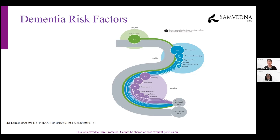Towards later life, the most important risk factors to keep in mind are depression — it's important to address that. Stop smoking — that is a surprisingly high contributor at 5%. Social isolation is very common and can be addressed with minimal inputs. Air pollution and diabetes are things we need to work on together as a community. Physical activity — the importance of exercise really can't be overemphasized.